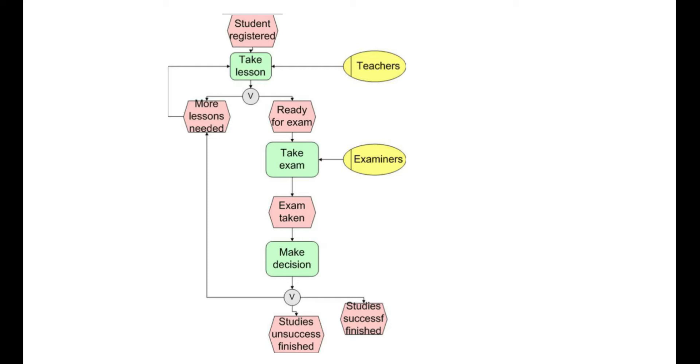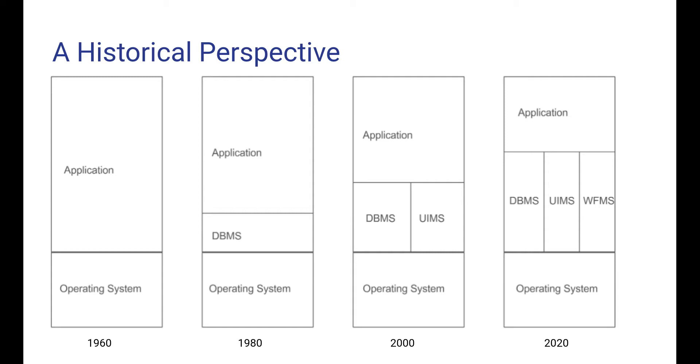This figure shows a historical perspective on the development of software systems for supporting systems and application design. In the old days in the 1960s an application developer only had the operating system as a basis. She had to build everything else herself on top of this operating system. But it turned out that the developer did a lot of repetitive work when it came to data management.